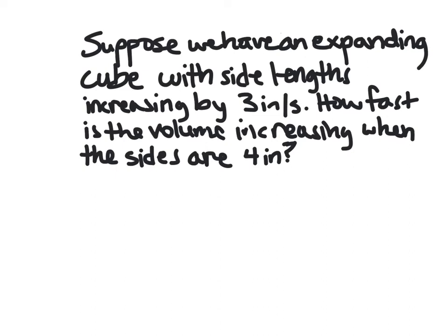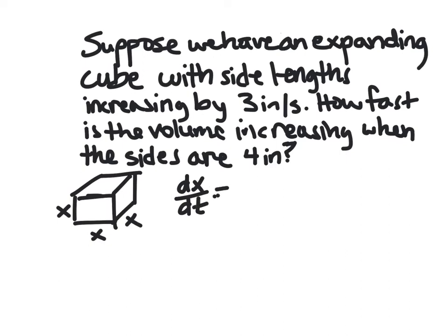So of course, with a cube, all sides are the same length. In this case, all we really know is the rate at which these are changing. So let's just label all these side lengths x. We know that dx/dt is 3. And we want, if we call volume v, we want the rate of change of volume, so we want dv/dt at the moment in time when x is 4.